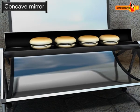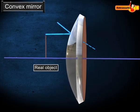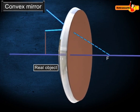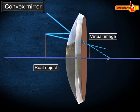A convex mirror always produces an erect image of the object. The image formed by a convex mirror is smaller than the object.